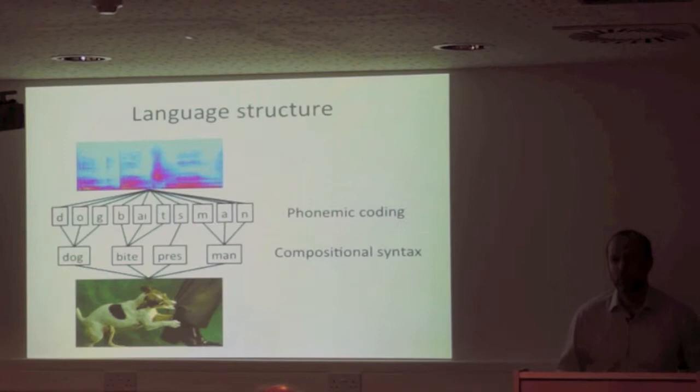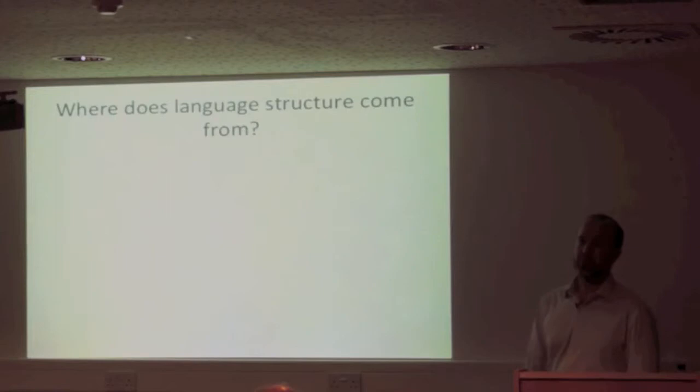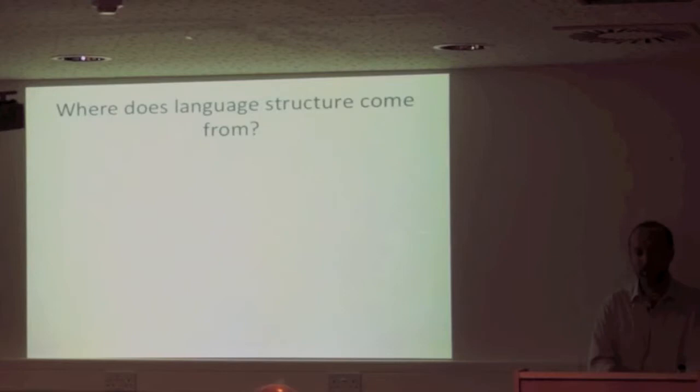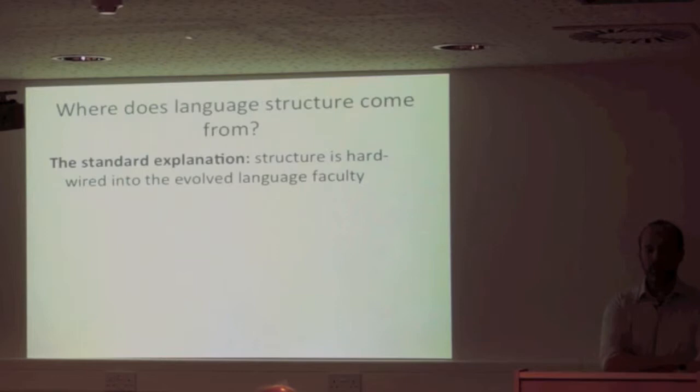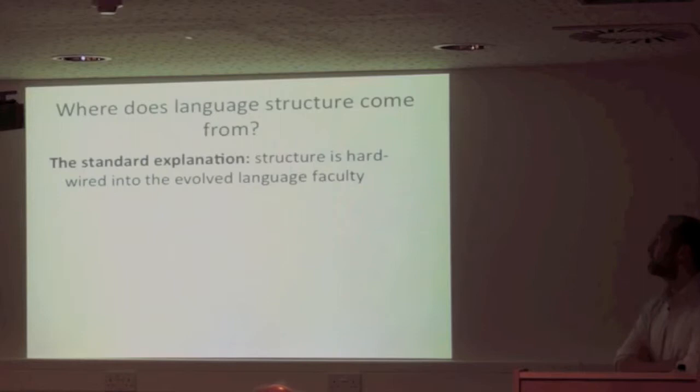Languages have structure, and we want to know where linguistic structure comes from. How come no other species has a communication system that works in this way? There are at least a couple of explanations. The standard explanation — which I'm going to be arguing against — holds that structural properties of language are hardwired into an evolved language faculty. It's a good explanation, but I think it's not quite right.